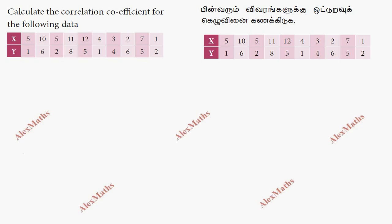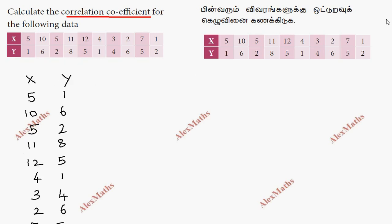Hi students, this is Alex here in the product lab. Correlation coefficient — the data is one thing, small numbers are good. On a line, the direct way to the problem: x and y among the table. Formula for the problem.